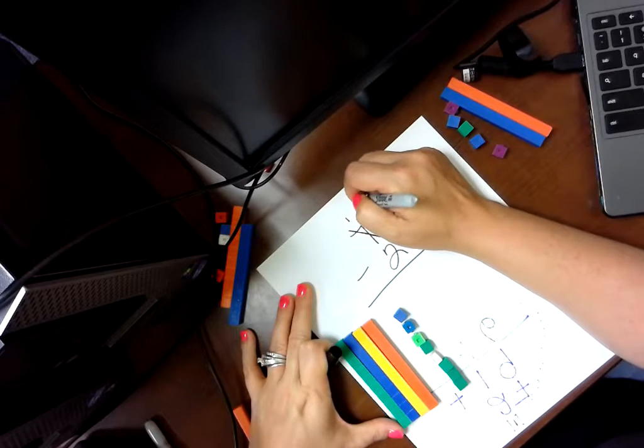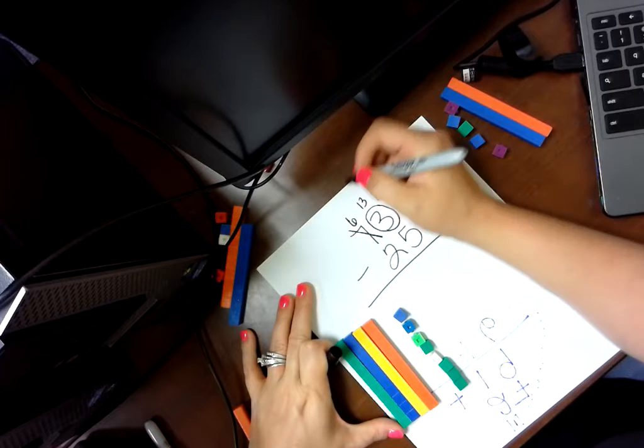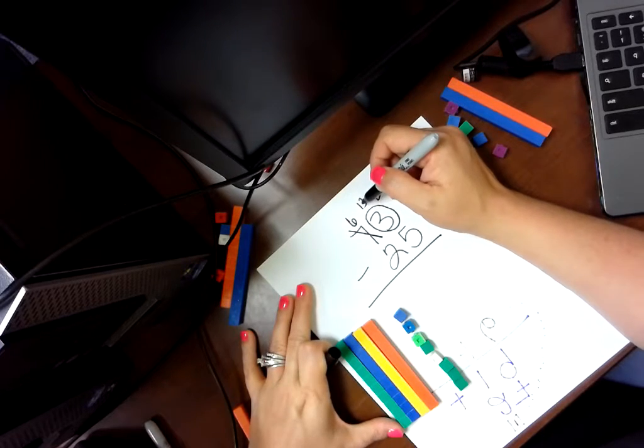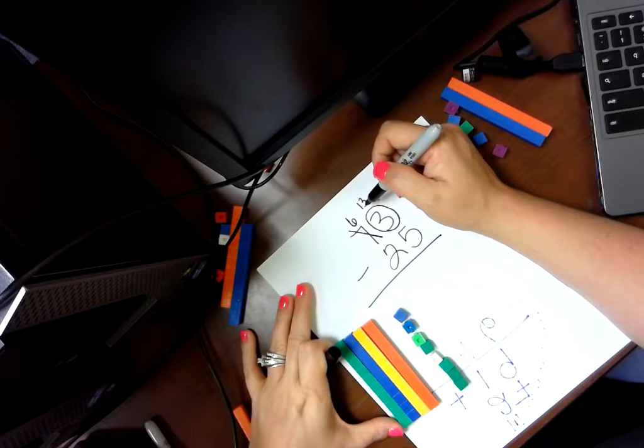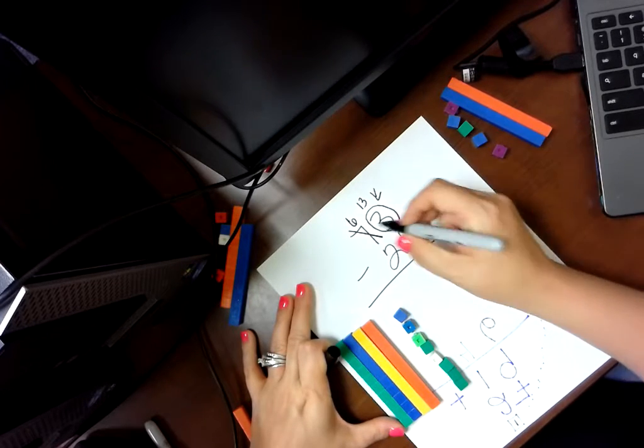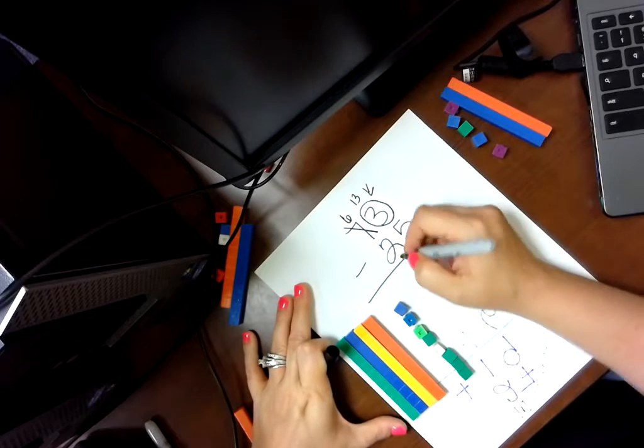So, this is going to be a 13, and this is going to be a 6. Now, I have a problem. I can actually subtract. 13, take away 5, is 8, and 6, take away 2, is 4.